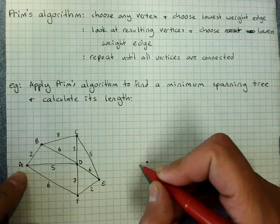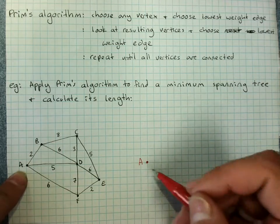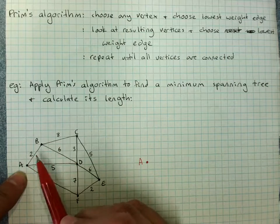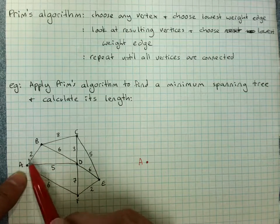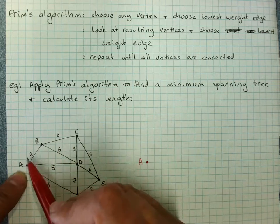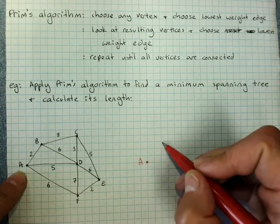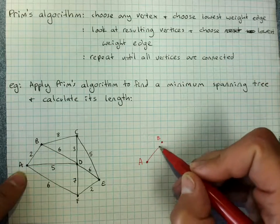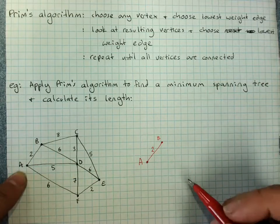It's kind of easier to redraw your tree. Look at all the edges coming off A: 2, 5 and 6, and choose the lowest weight edge. That will be 2. So now I've got to put in B and that edge of 2.